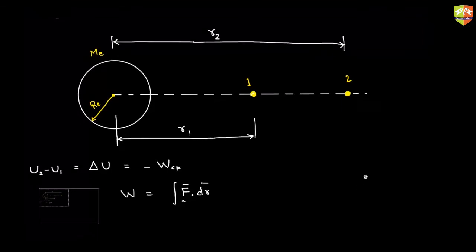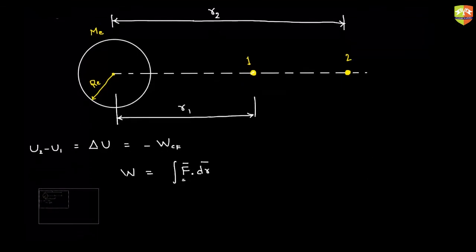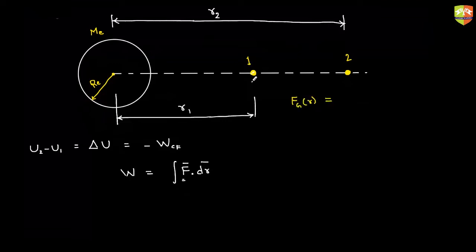The distances are very large, so you can't say gravitational force is mg, because g itself is changing. The gravitational force at a distance r, for a mass small m, is G times m times mass of Earth, divided by r squared. This is the gravitational force.